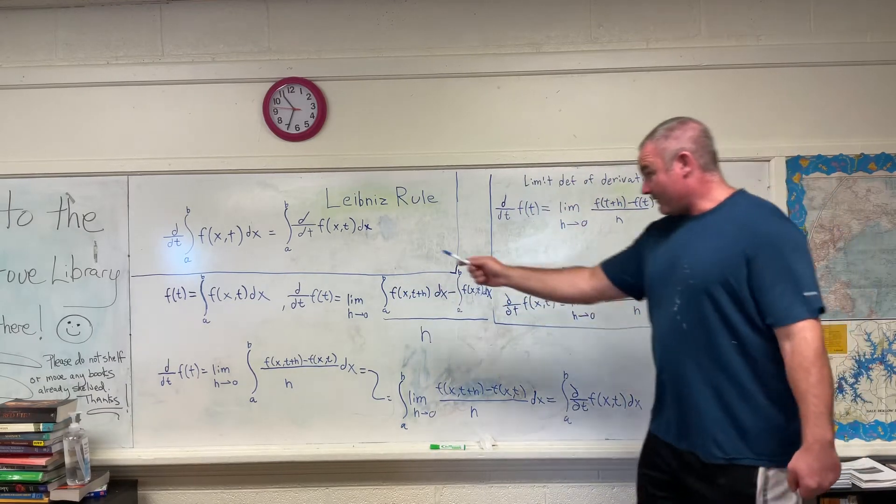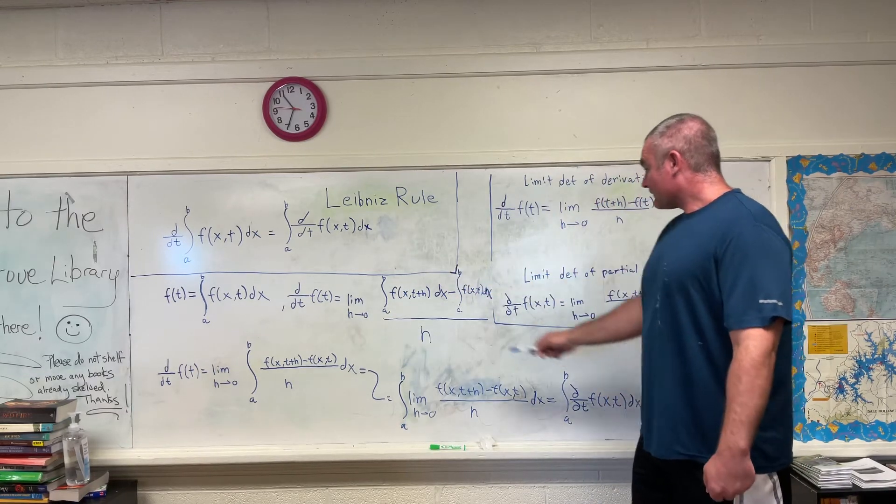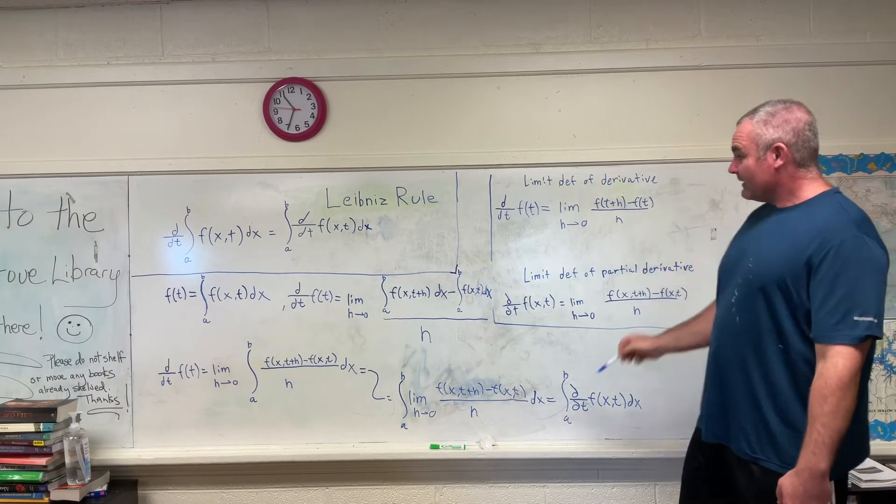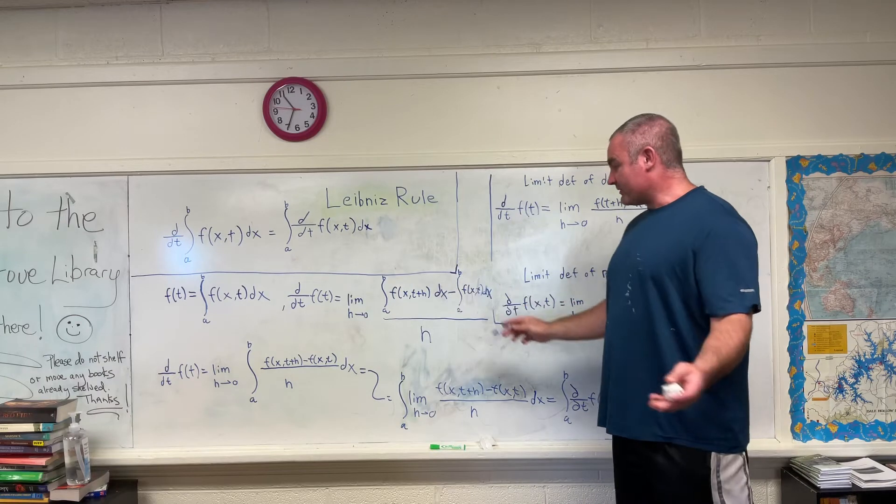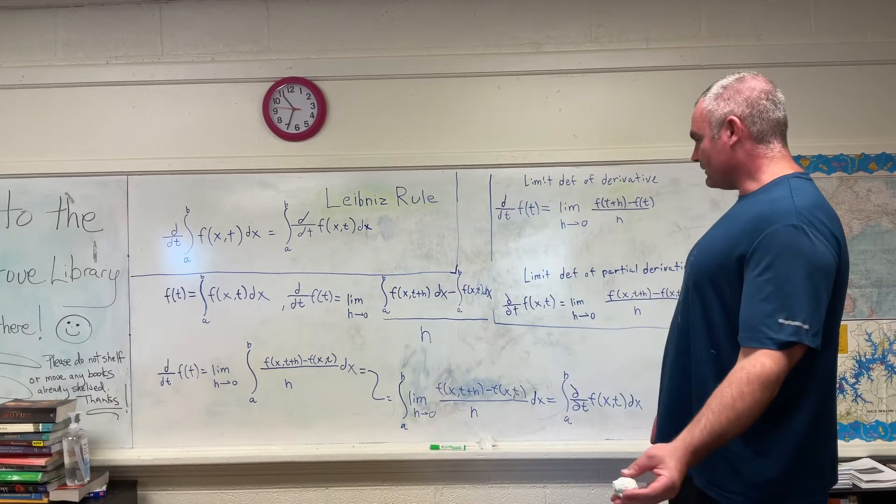Minus f of t. Again there's our f of t, it's defined. Then we're taking it over h as in the limit definition right here, and we're taking h going to zero, we're letting h approach zero. So you should have no problem with that step.